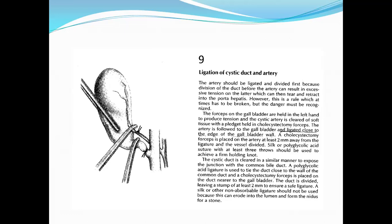The artery should be ligated and divided first, because the division of the duct before the artery can result in excessive tension on the latter, which can then tear and retract into the porta hepatis. However, this is a rule which at times has to be broken, but the danger must be recognized. Ligation of the cystic duct and artery is a very important step and has to be done very carefully. The forceps on the gallbladder are held in the left hand to produce tension, and the cystic artery is cleared of soft tissue with a pledget held in the cholecystectomy forceps. The artery is followed to the gallbladder and ligated close to the edge of the gallbladder wall. The cholecystectomy forceps is placed on the artery at least two millimeters away from the ligature and the vessel divided. Silk or polyglycolic acid suture with at least three throws should be used to achieve a firm holding knot.